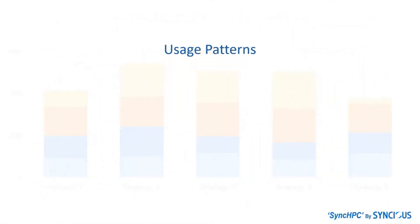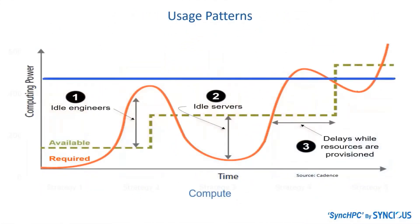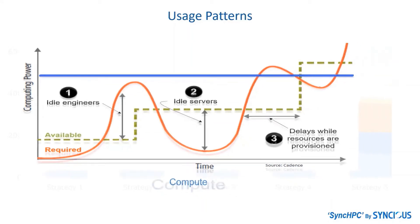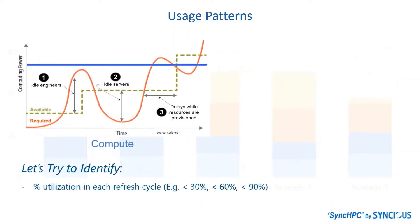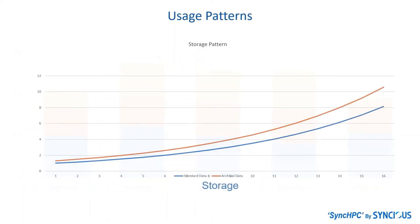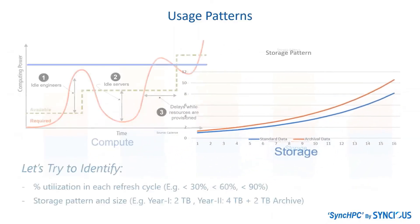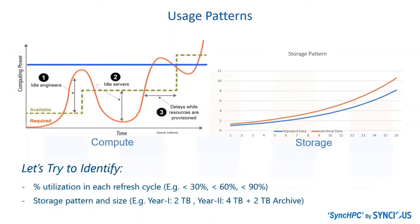Stage 1: Usage Pattern. This graph will help you to understand the usage of the HPC system at various periods. The blue line indicates the actual power of the HPC system. This second graph indicates the usage of data storage, which also increases over time.